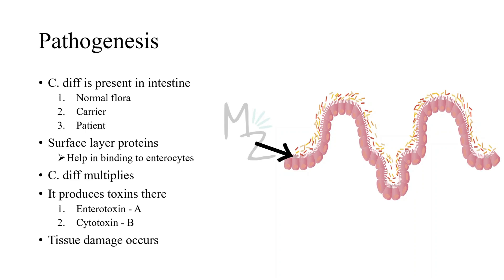When C. difficile is present in the intestine, it has surface layer proteins that help it bind to enterocytes, as seen in this picture showing bacteria binding to the brush border. When present as normal flora, it exists in numbers that do not cause infection. However, if its numbers increase beyond that normal threshold, infection occurs.